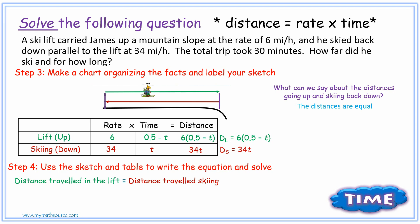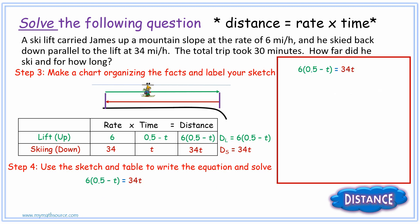Since the distance traveled in the lift is equal to the distance traveled skiing, then that means our distance in the lift, which is 6 times the expression 0.5 subtract T, is going to be equal to the distance traveled skiing, which is 34T. And now we have our equation. When you're multiplying a number by an expression, you need to distribute by multiplication into that expression. Every term is being multiplied by the 6. So 6 times a half is 3, and 6 times T is 6T, or negative 6T. So we have 3 subtract 6T equals 34T.